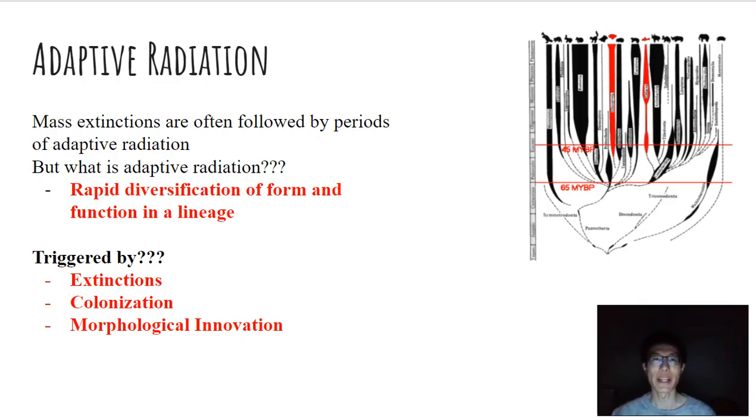Adaptive radiation is a very interesting concept proposed by evolutionary biologists and evolutionary ecologists, and it's this really interesting way to look at speciation. More specifically, a way for one particular lineage to diversify dramatically, often following certain events.